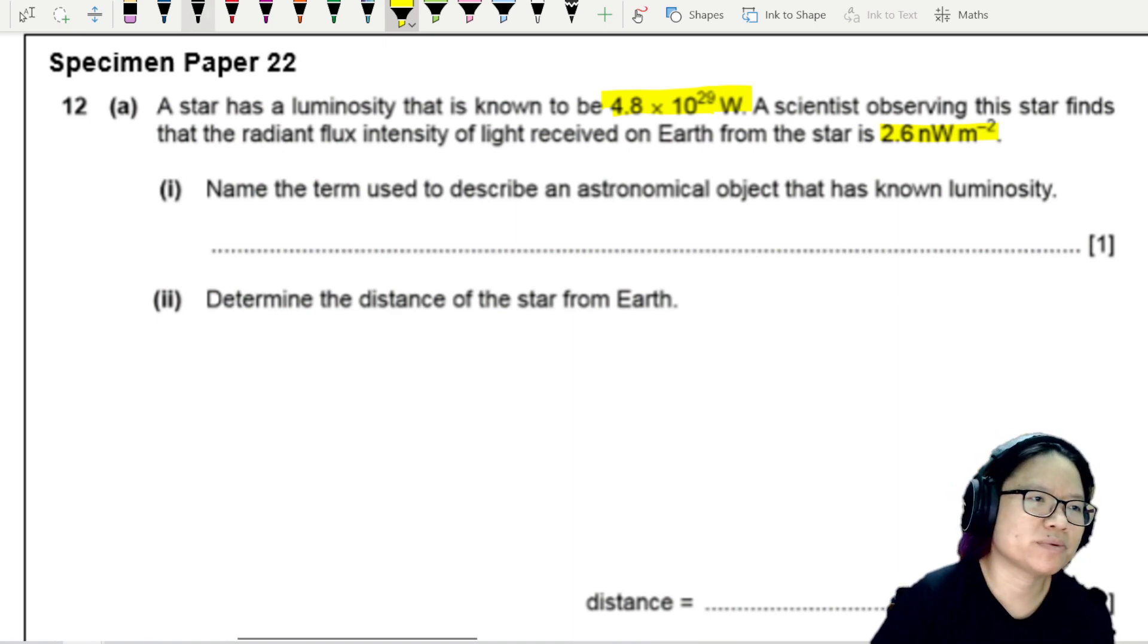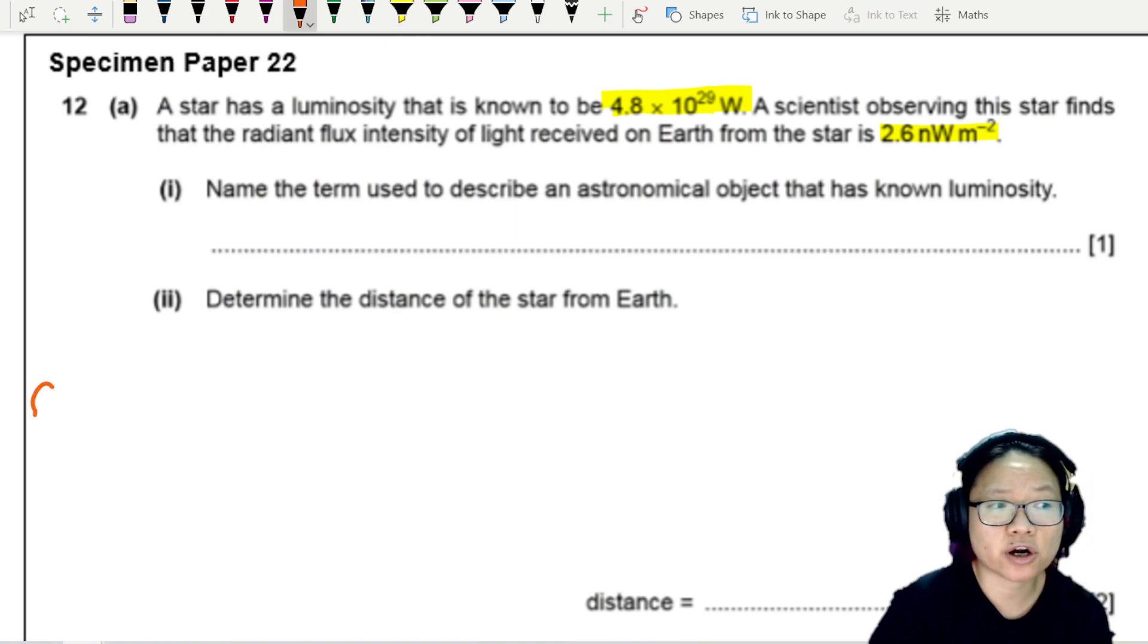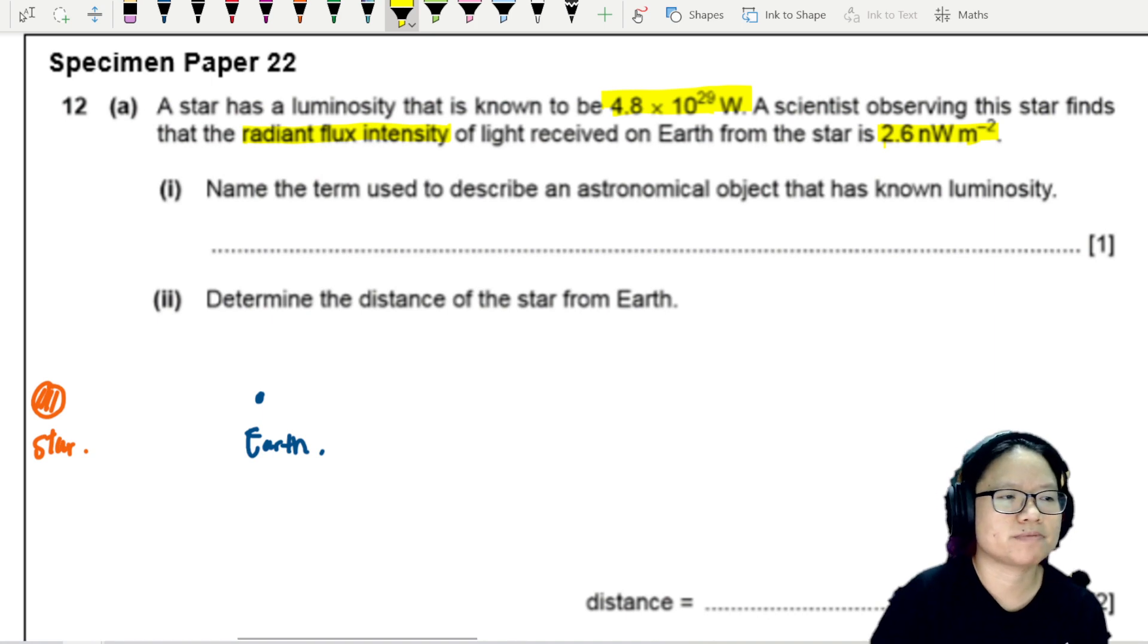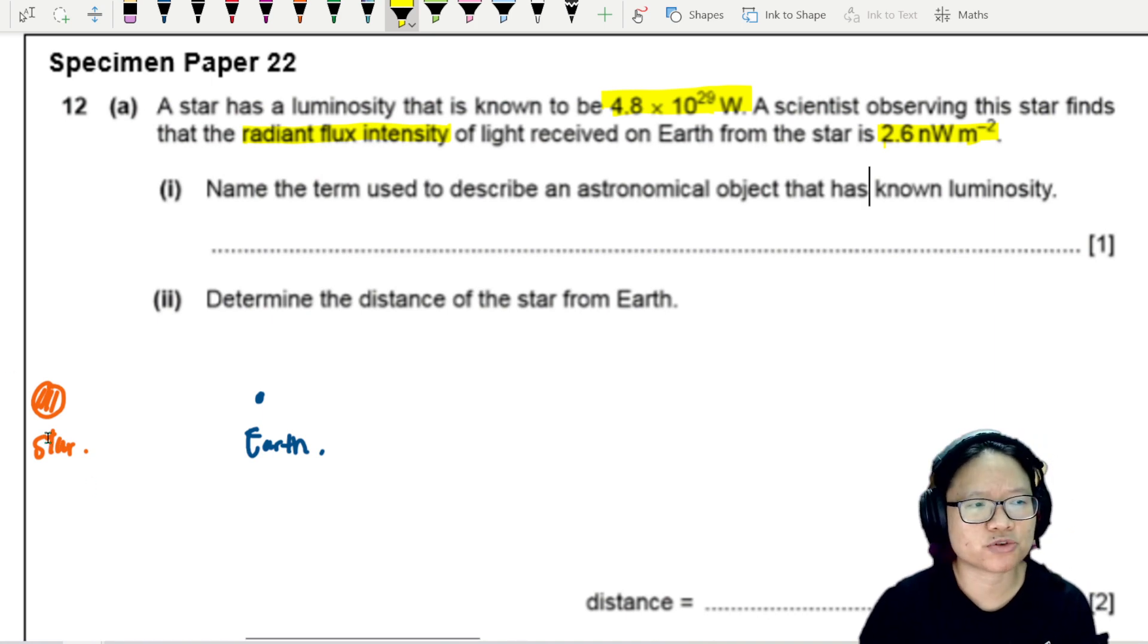So basically what we're saying is, you know, the star, then by the time you reach Earth, which is our little blue planet, the radiant flux intensity has decreased. So it starts here and then the intensity drops as it travels towards Earth.